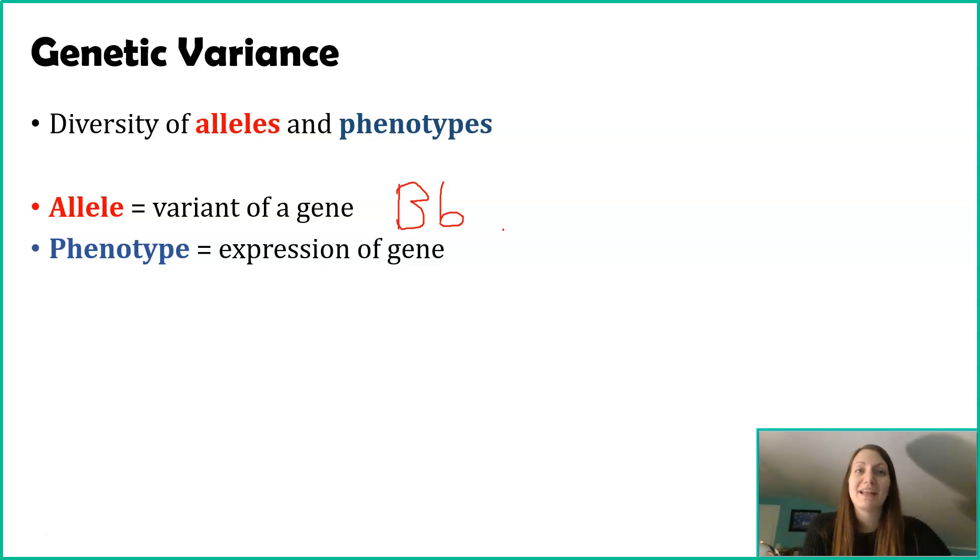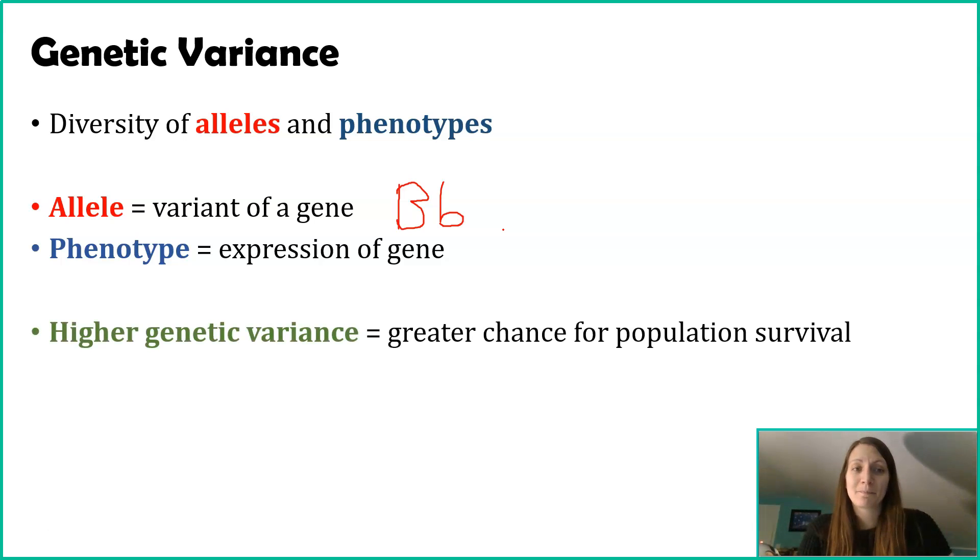When we say variance, what we're meaning is a variety of these phenotypes and of the alleles. Just in general, especially as we move more through this unit, typically having more genetic variance or higher genetic variance in a population is good. The more variation that exists, the higher likelihood that population will survive.